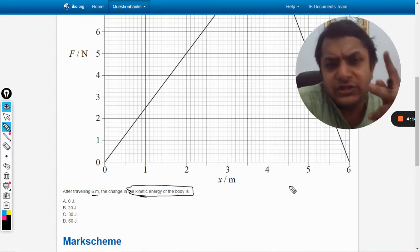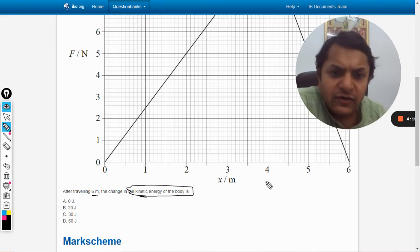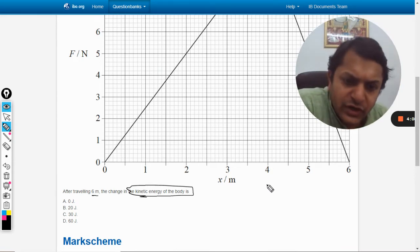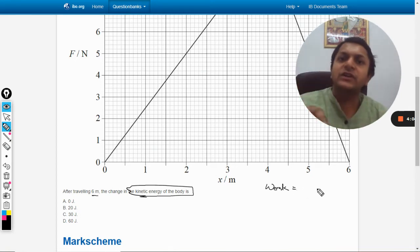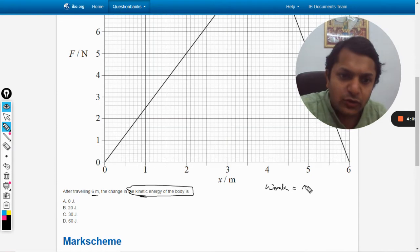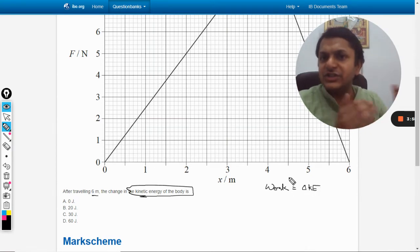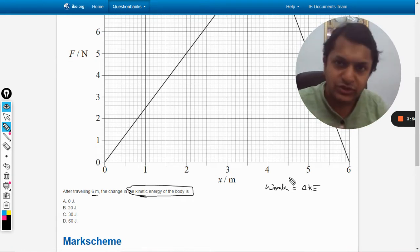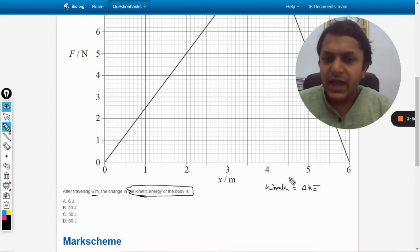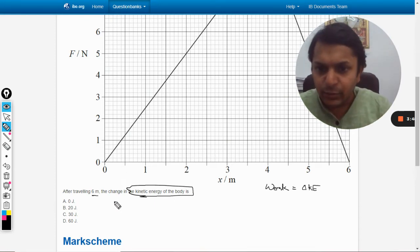So we are going to use two concepts here. Number one, that which is called work energy theorem. So work energy theorem is that work, net work, the total work done on the body is equal to the change in kinetic energy because the change in potential energy is not covered here, which motion in one D.